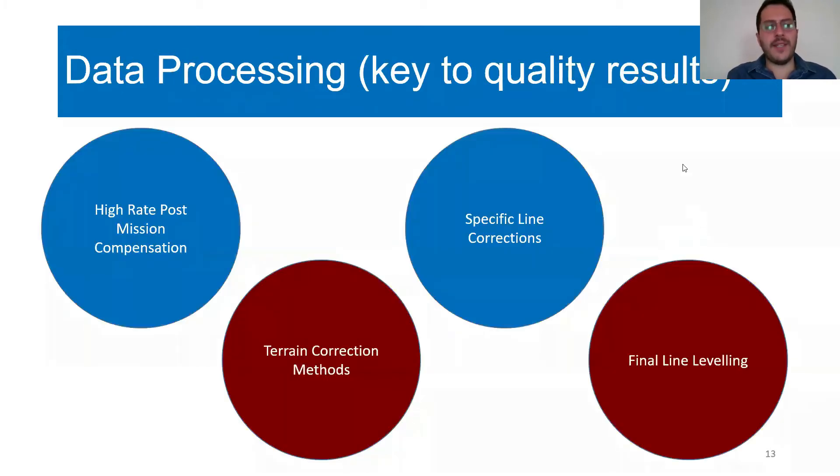Acquired FTG data undergoes a series of processing steps to obtain final data used for interpretation. Here are some processing steps done by Bell Geospace for airborne gravity gradiometry data. High rate post-mission compensation includes correction for the gradient of the aircraft and the gradient of the instrument itself. Bell Geospace uses a 3D modeling package to calculate terrain corrections. Specific line corrections calculate the tensor components from the measured inline and cross data sets, then removes low frequency errors through basic line leveling. Final line leveling is applied to produce data suitable for mapping.